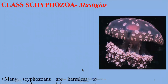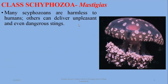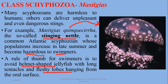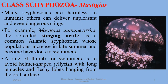Many scyphozoans are harmless to humans; others can deliver unpleasant stings. The so-called stinging nettle is a common Atlantic scyphozoan whose populations increase in late summer and become hazardous to swimmers. A simple rule for swimmers: the helmet-shaped jellyfish with long tentacles and fleshy lobes hanging from the oral surface should be avoided to stay safe from the stinging nettle.